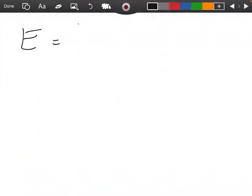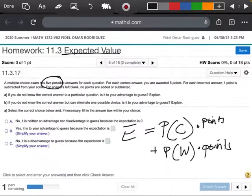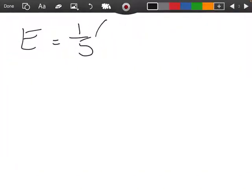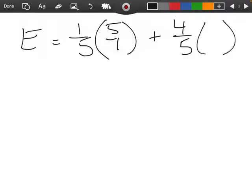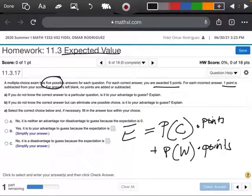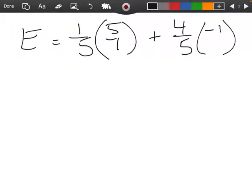So the probability that we get it right is one out of five, because there's five answers, only one of them is going to be correct. Now, if we guess correctly, we're going to get five points. So I'm going to multiply this by five over one. Now, the probability that we're going to get this wrong, if there's five choices, only one of them is right, that means that the other four answers are going to be wrong. And for every wrong choice, one point is subtracted. So that's actually going to be a negative one.